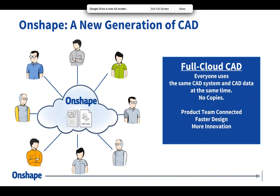That's really the idea behind Onshape — one document that is the only source of truth. It's not a file-based system; it is a database structure. This allows multiple people to edit at the same time. The architecture shift eliminates the need for passing CAD data back and forth — with one set of data accessible from any device, there's only one version of the model. We don't have to worry about who has the latest, where the file is, whether references are broken — those issues simply don't happen because of Onshape's unique architecture.